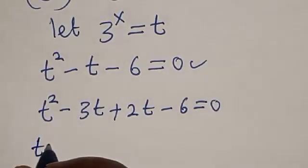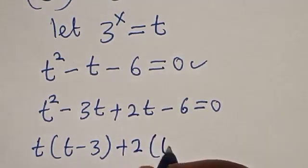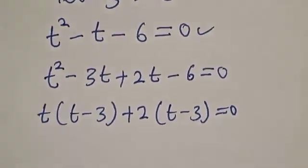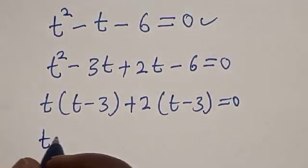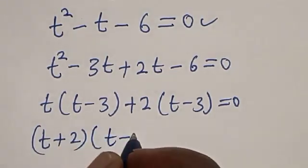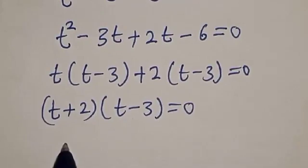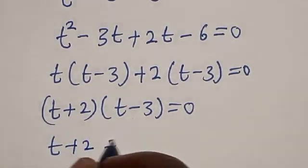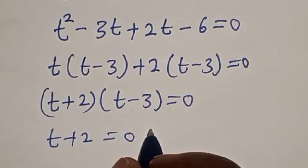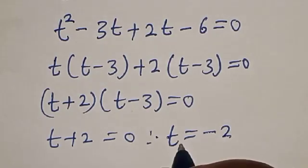Factorizing t squared minus t minus 6 equals 0, we get (t minus 3) multiplied by (t plus 2) equals 0. From t plus 2 equals 0, therefore T equals minus 2. That is T₁.